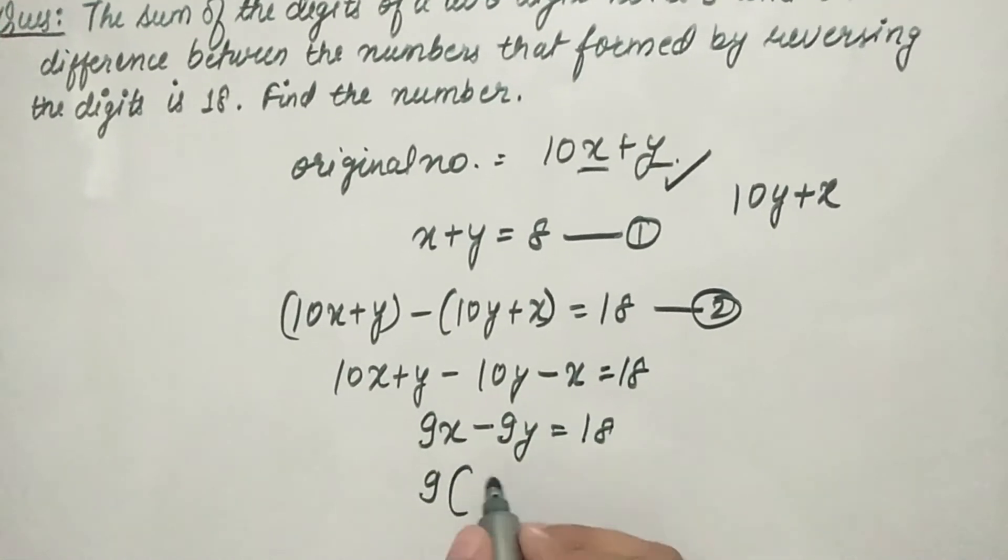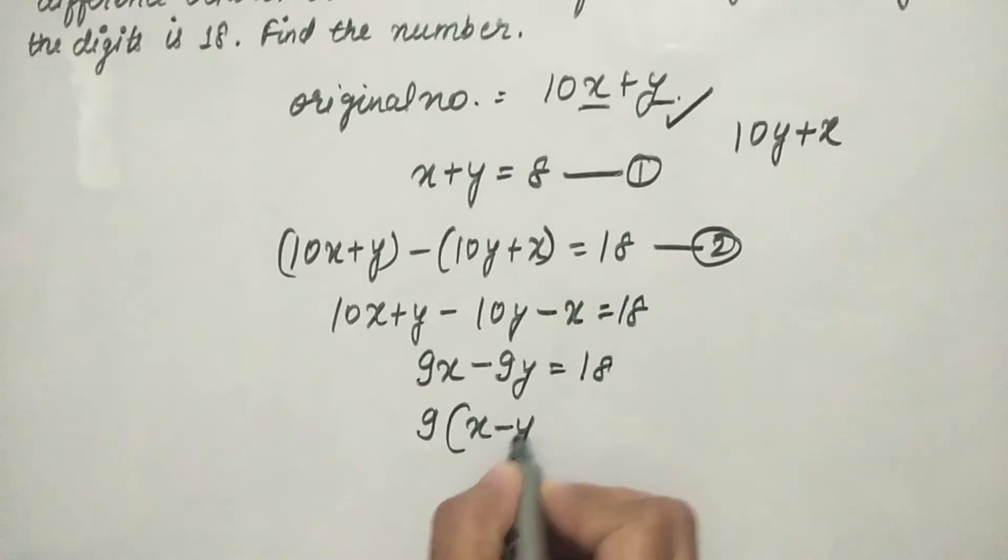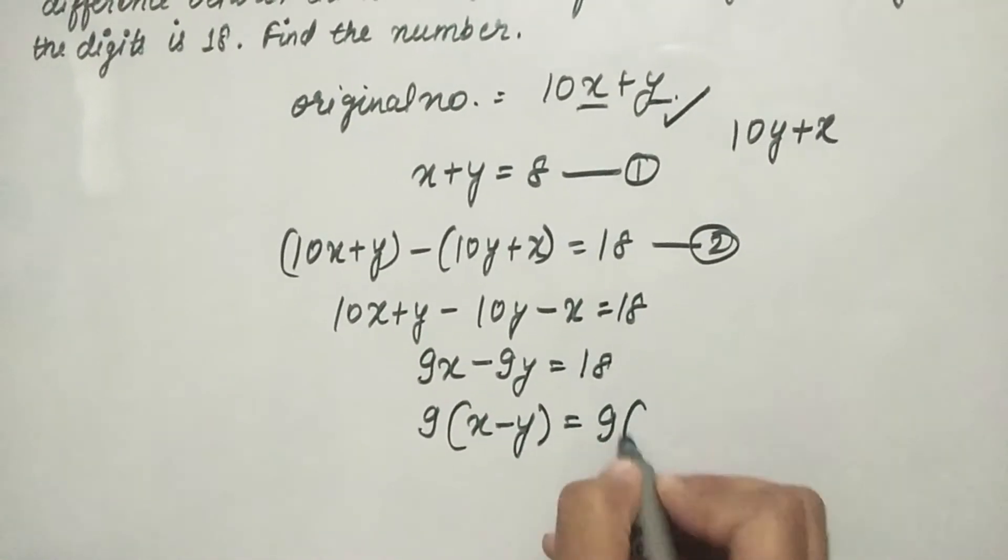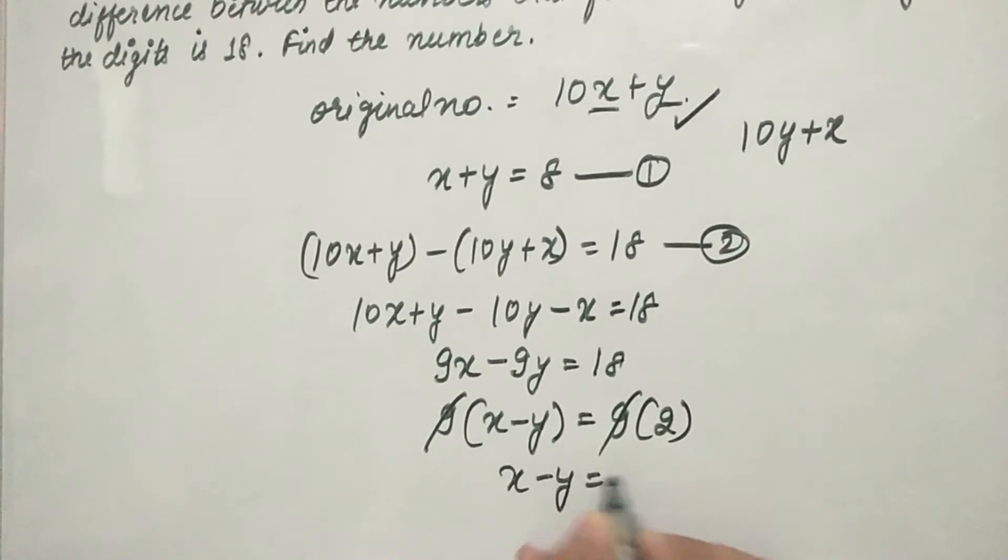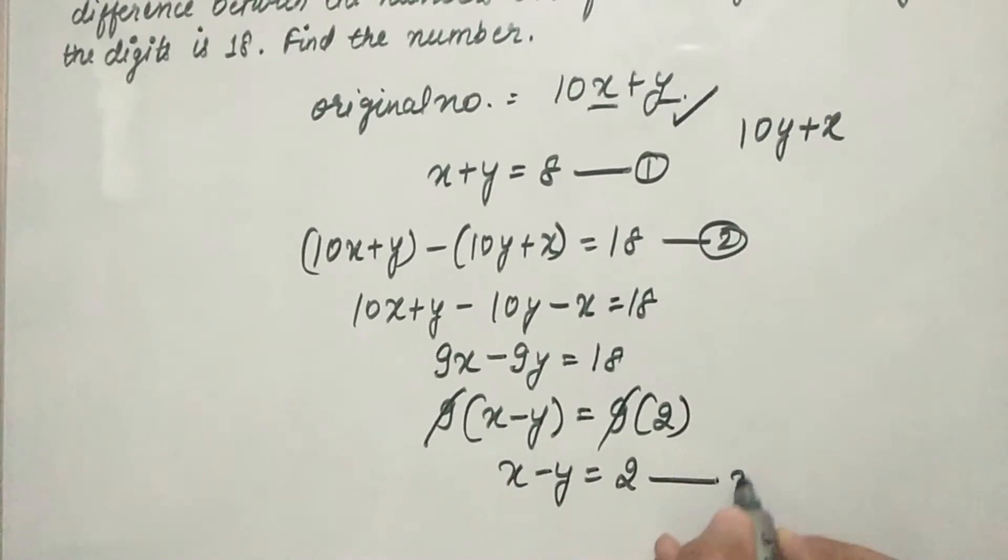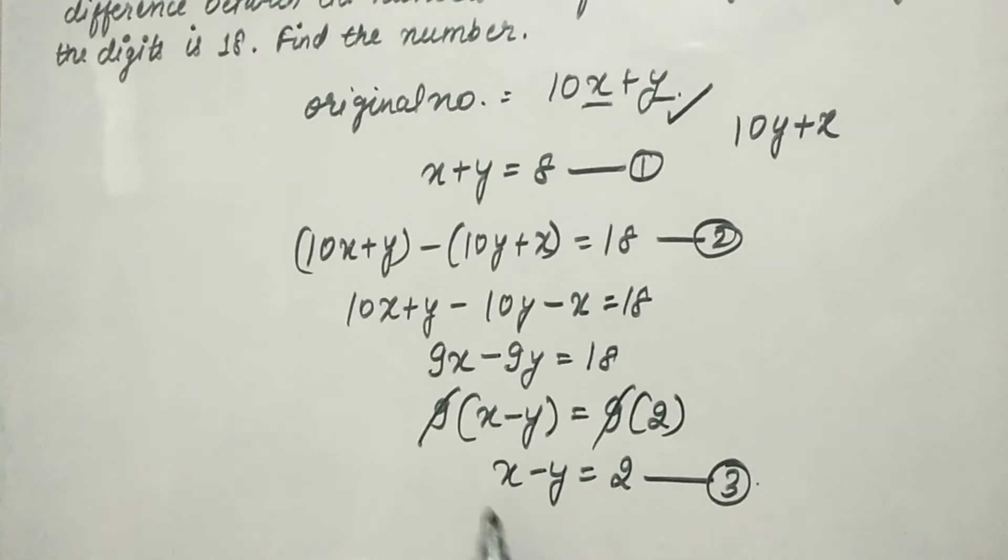Factoring out 9, we get 9 times (x minus y) equals 18. Dividing by 9, x minus y equals 2. This is equation 3. Now we will solve x plus y equals 8 and x minus y equals 2.